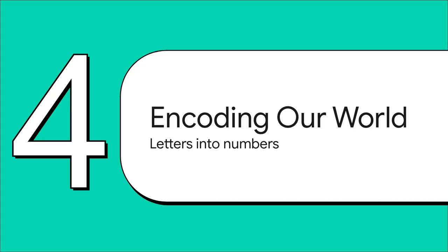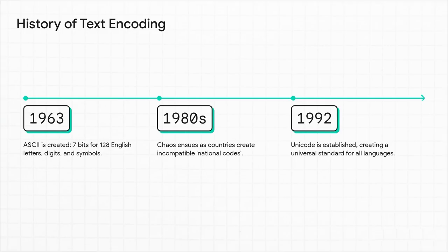Okay, so computers are total wizards with numbers — we get that. But what about words? How do you teach a machine that only speaks in ones and zeros to understand the letter A, or a question mark? Well, that's where we get to the brilliant idea of encoding. Way back in 1963, the first standard was created. It was called ASCII, and it basically assigned a unique number to every letter, digit, and symbol in the English language. But it had a huge problem — it was designed only for English. So when computers started going global in the 80s, different countries made their own codes, and the result? It was total chaos.